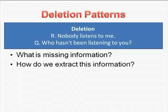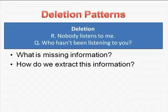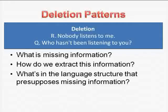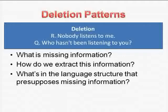What is the missing information, and how do we extract it? This is a question for you to ask yourself so that you can find out a little bit more. What is in a language structure that presupposes missing information? When somebody says "nobody listens to me," we don't know who that nobody is. We have no idea what listening really means, under what context or situation. Maybe this particular situation is very unique and it may not mean nobody at all.